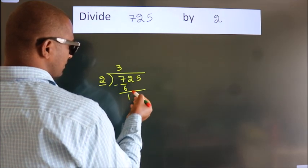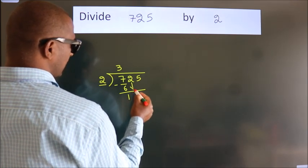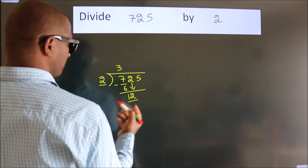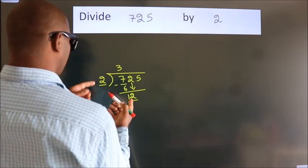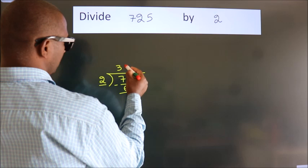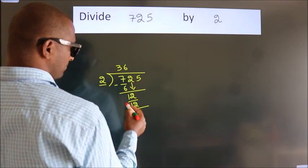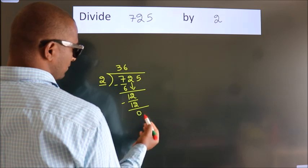After this, bring down the beside number, so 2 down, so 12. When do we get 12? In 2 table, 2 6s 12. Now we subtract, we get 0.